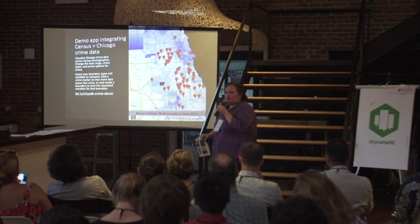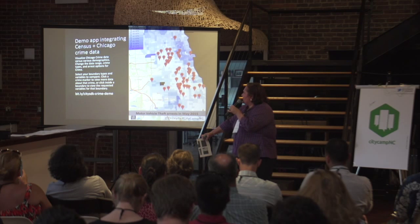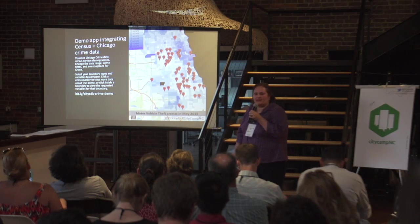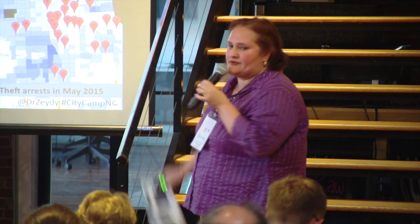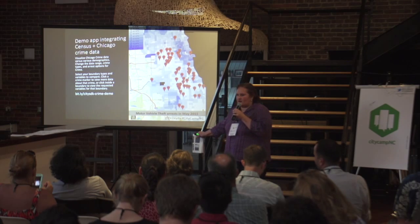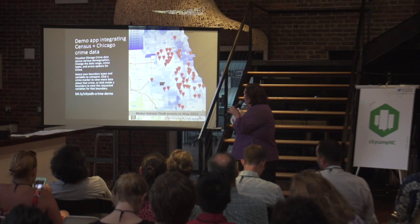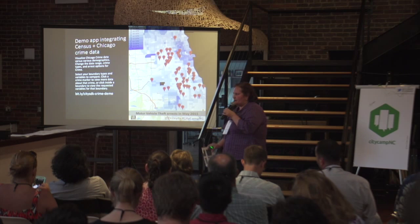This is a view of one of the demo apps. It integrates data as well as the Chicago crime data. I selected motor vehicle arrests in May of 2015 and the median household income. You can see that the white parts of the areas indicate lower median household incomes. With the visualization in this app, we can tell that the arrests were mostly concentrated in those areas of lower income.